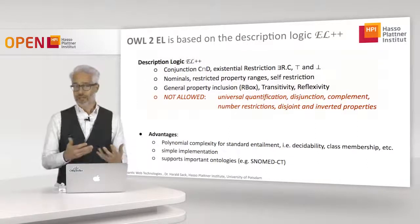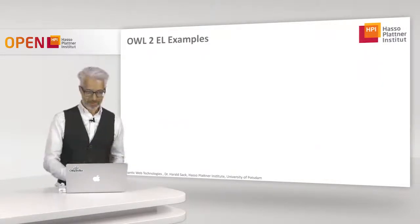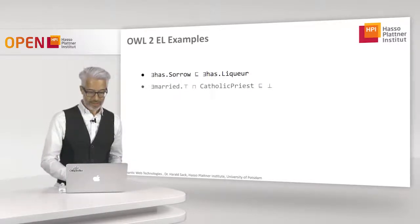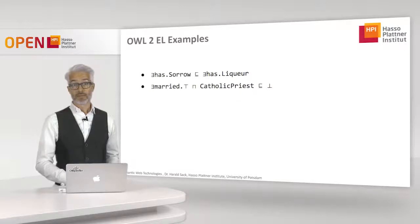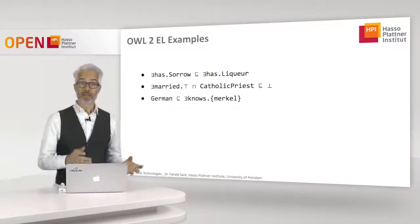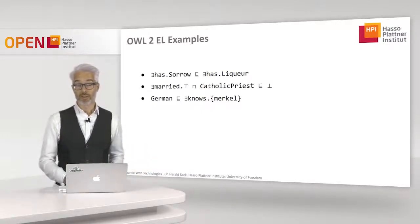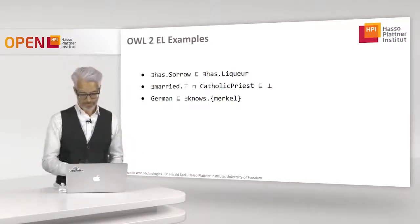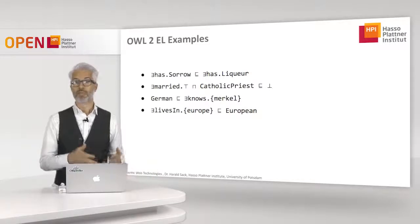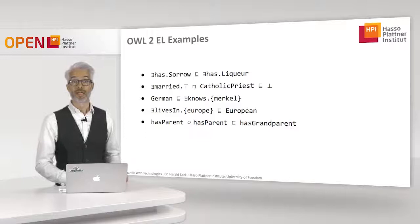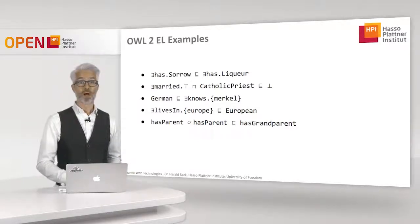OWL 2 EL has polynomial complexity for standard entailment algorithms like decidability and class membership testing. It supports important existing ontologies — for example, the SNOMED CT biomedical ontology is based on this description logic. Examples: one who has sorrows always has liquor; married and Catholic priest are disjoint; a German knows an individual called Merkel (a nominal); someone who lives in Europe is a European; grandparent chains via R-box axioms; a CEO is supervised by himself.